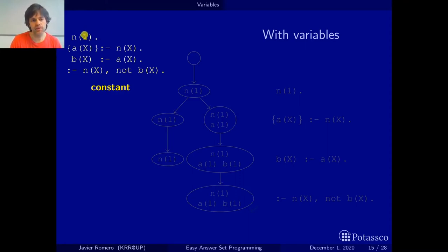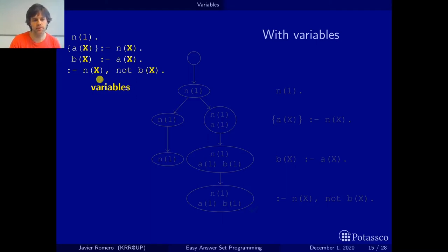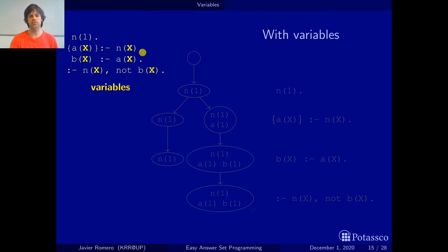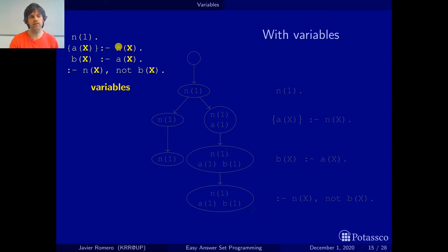With a constant we can refer to a specific object, in this case a number, and with other constants we can refer to specific things or beings. Now if we want to refer to things in general then we use variables like this X that appears in various positions. This is used to refer to every possible object. So this choice rule we can read as: for every X, if n(X) belongs to the set then we may choose to add a(X), or a(X) may also belong to the set.